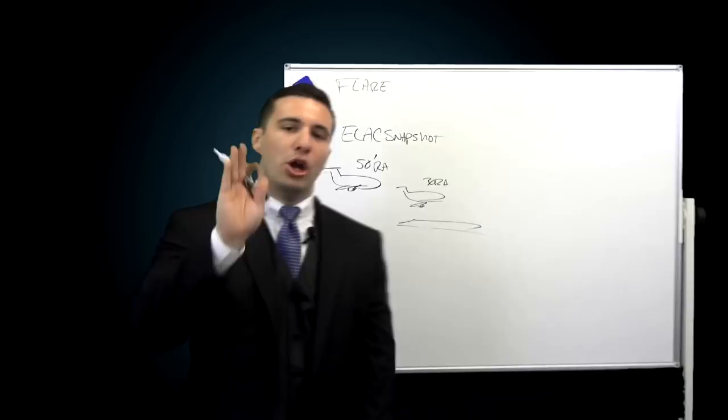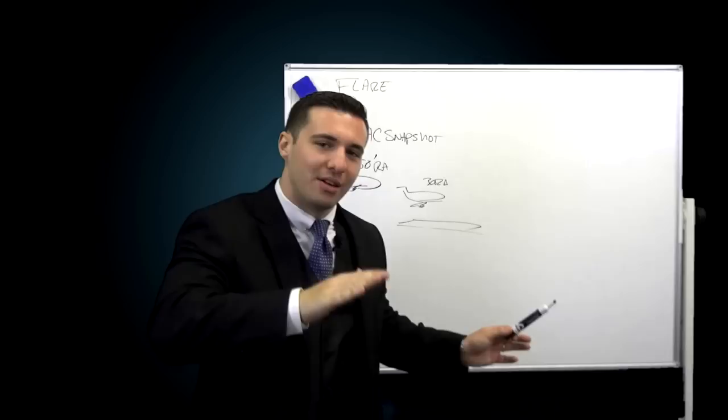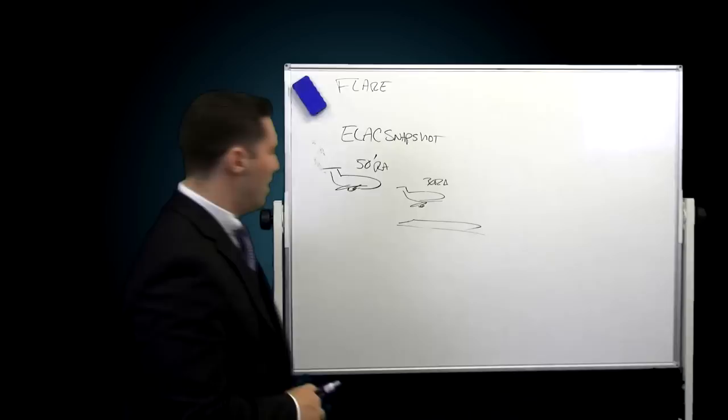Now when you get down to 30 feet, this is all radio altitude by the way, what the aircraft is going to do is begin applying a nose down pitching moment over the period of eight seconds. So over the next eight seconds, the nose will begin to come down. If you were to go into a simulator and allow the airplane to come in, get to 30 feet, don't even touch the side stick, you would find that the nose begins to come down on you.